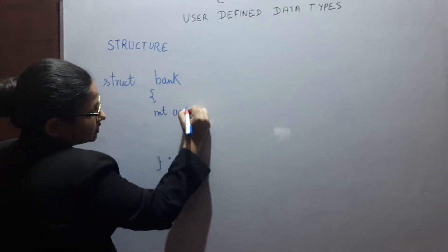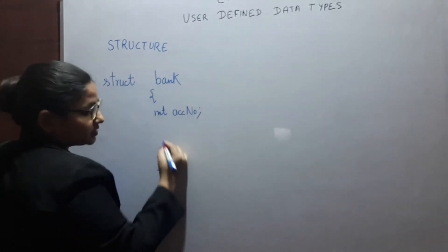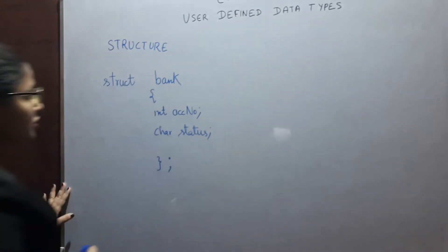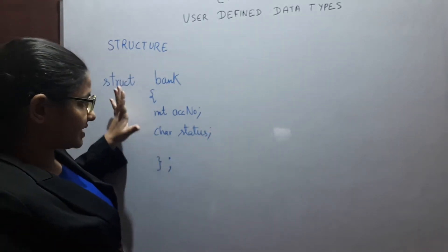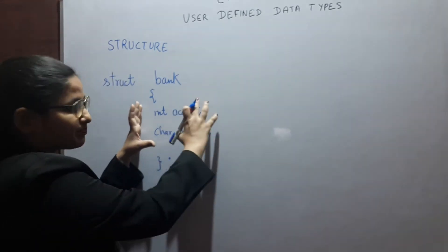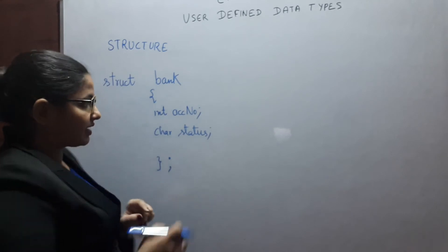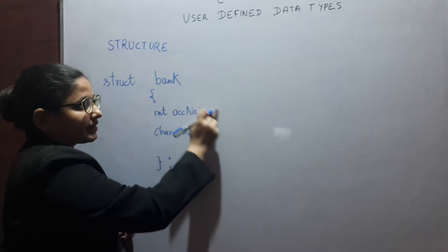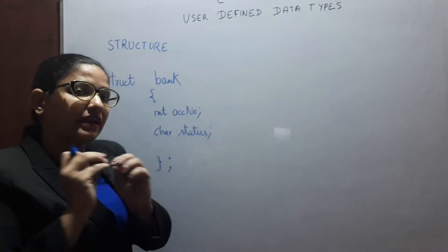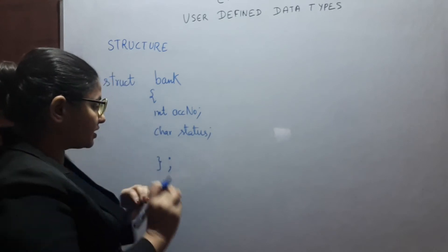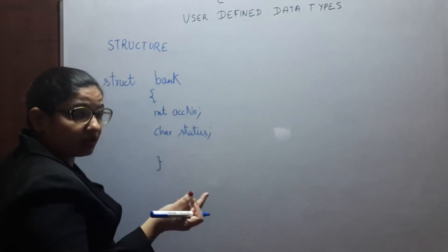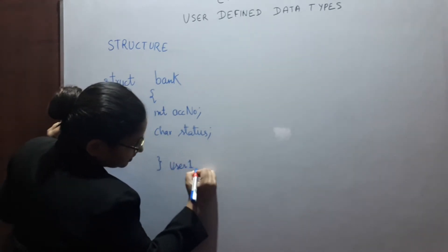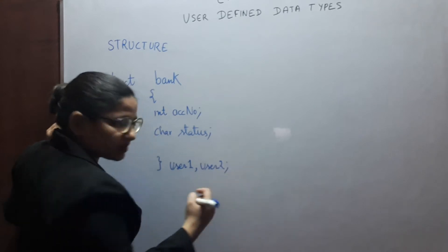Int account number, char status. As you can see, this is a structure. It is packing together two different data types, integer and character. These are logically connected with the account of a user. You can even create variable of this structure here like user1, user2 as many as you want.